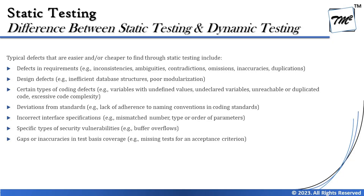Typical defects easier or cheaper to find through static testing include: in requirements — inconsistencies, ambiguities, contradictions, omissions, inaccuracies, or duplications; in design defects — inefficient database structures, poor modularization; coding defects — variables with undefined values, undeclared variables, unreachable or duplicated code, excessive code complexity; and deviations from coding standards, such as lack of adherence to naming conventions.